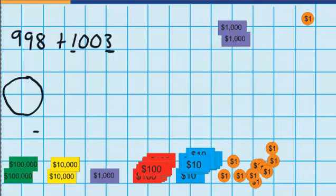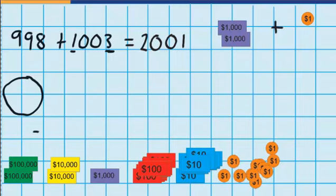So if I add those together, you can see that $998 plus $1,003 is the same as $2,001. I hope you found this lesson helpful. In our next lesson, we'll look at how numbers roll backwards in subtraction, and you can find that lesson at teachertools.co.nz.